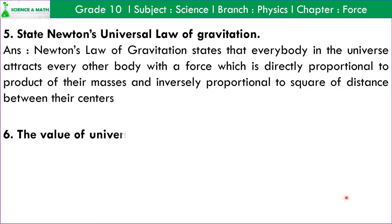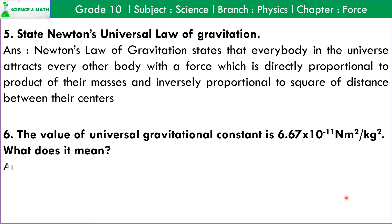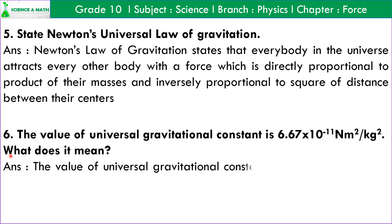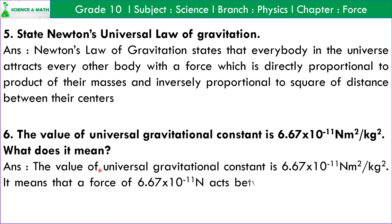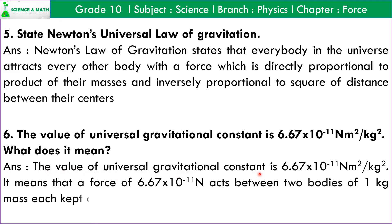Question number 6: The value of universal gravitational constant is 6.67 × 10⁻¹¹ Newton meter square per kg square. What does it mean? Answer: It means that a force of 6.67 × 10⁻¹¹ Newton acts between two bodies of 1 kg mass each which are kept at one meter apart from their centers.